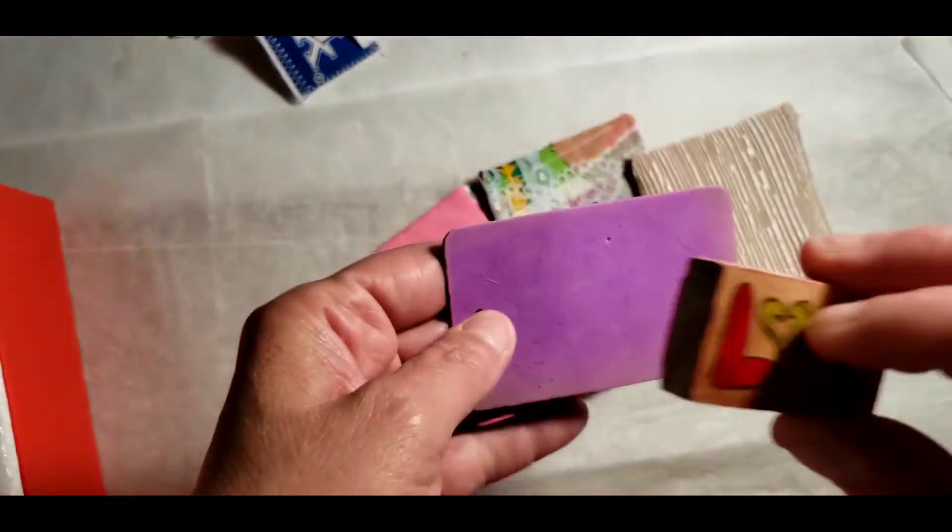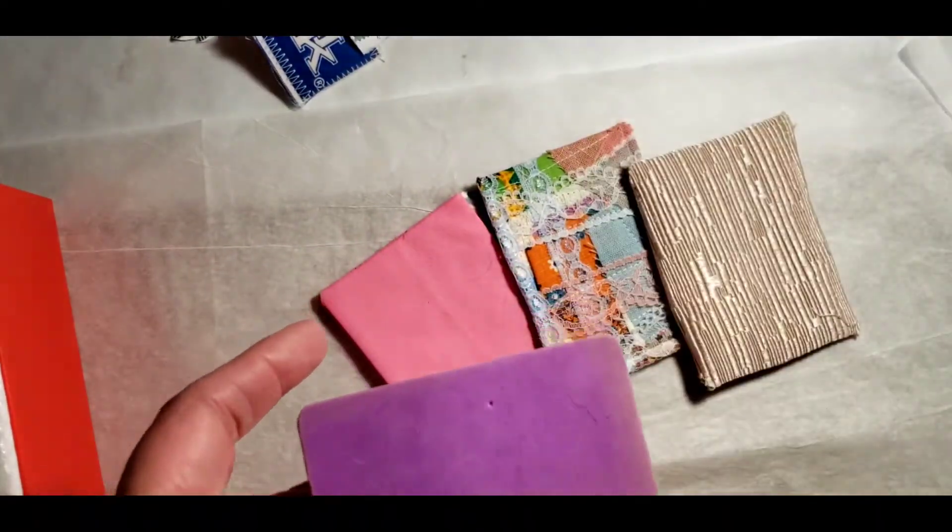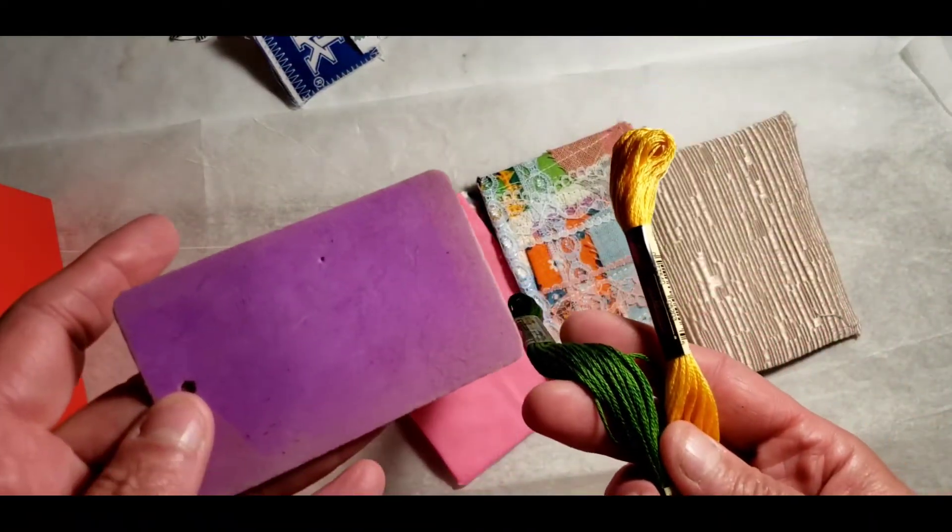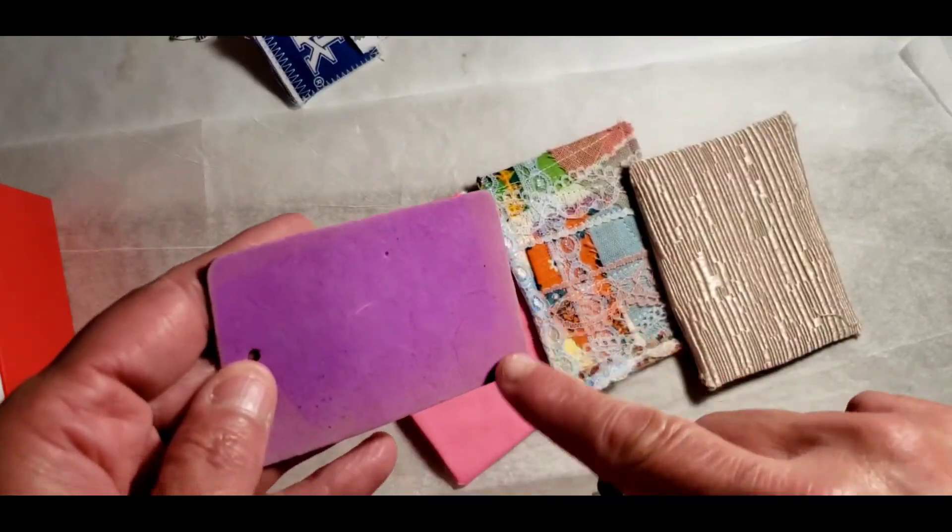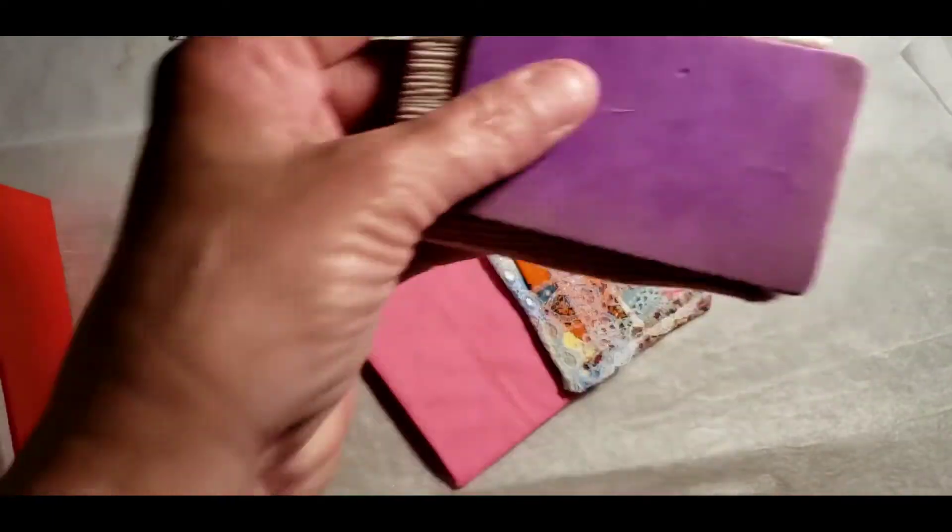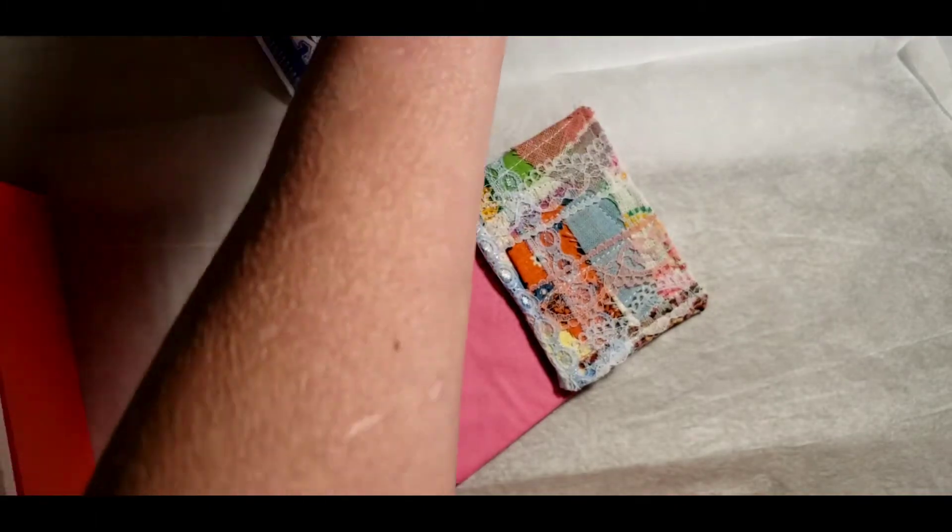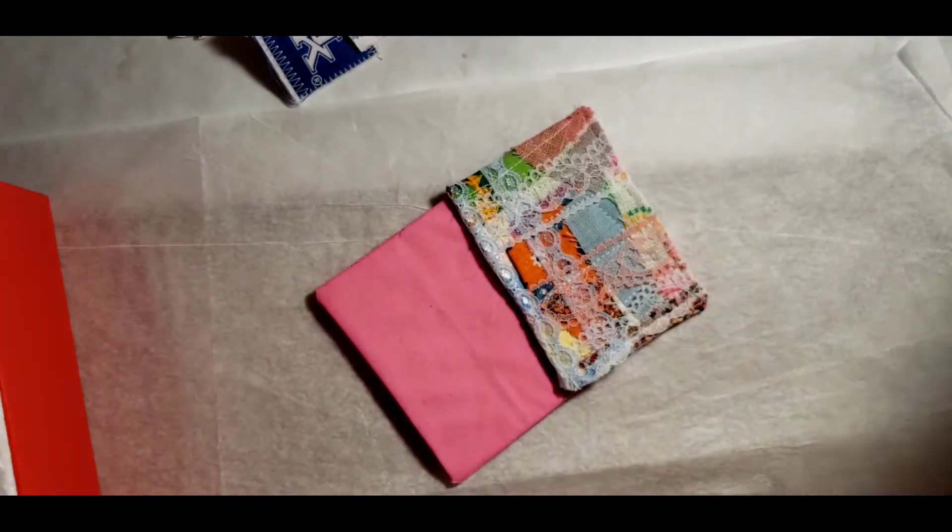Here I'm showing you some foam rubber sheets. Those are awesome to stamp on, and then you can take your embroidery and do some embroidery around it. It really gives it a nice effect.